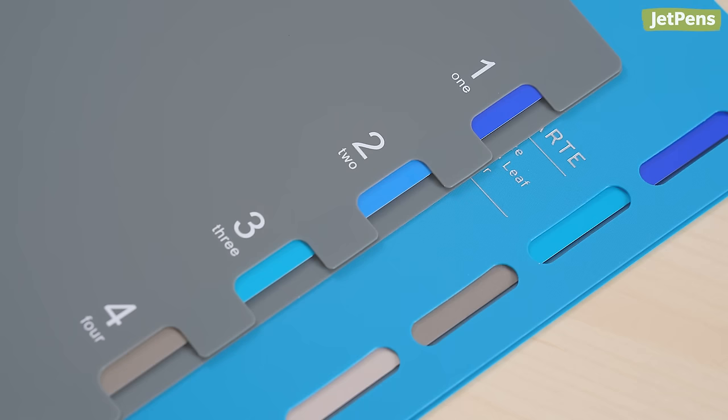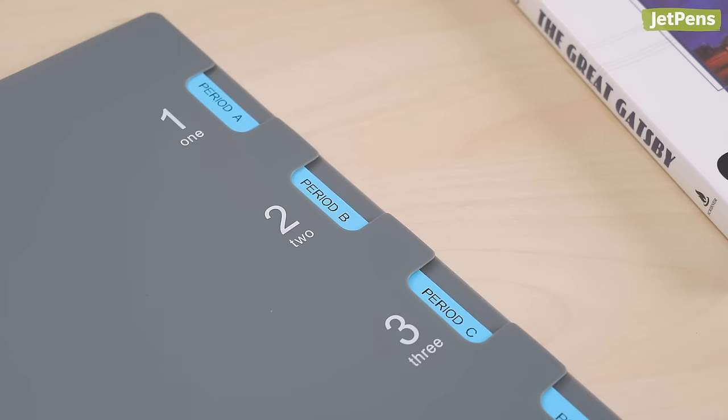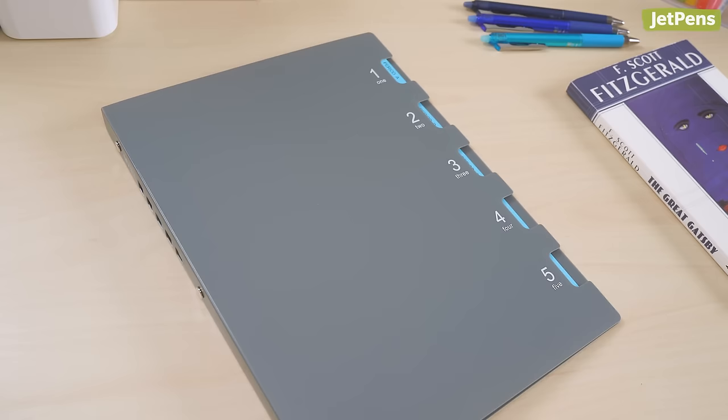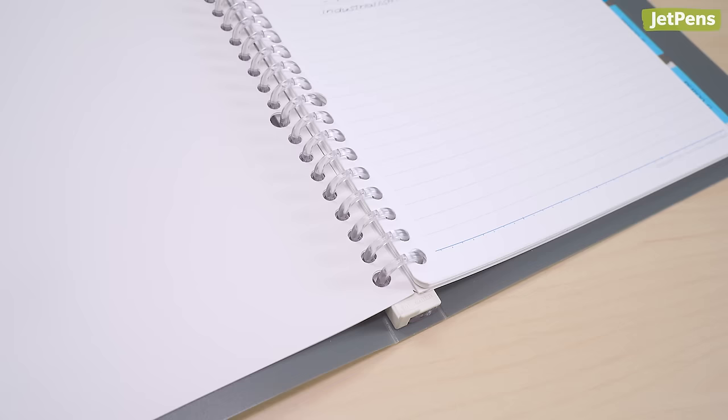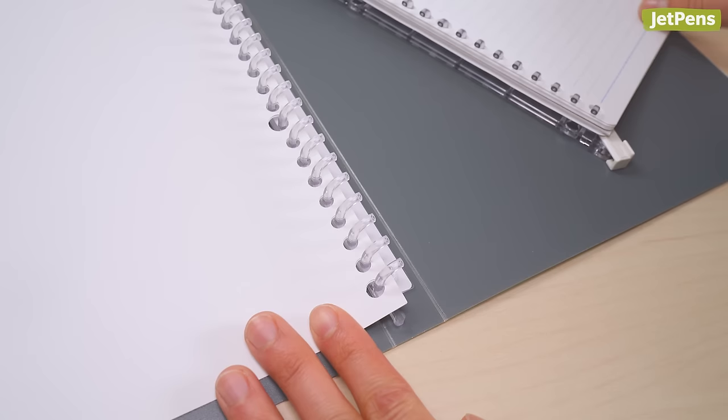Both the FiveChart and Clarte have cutouts in the cover that let you see the included index tabs at a glance. And in the FiveChart, you can flip directly to a divider without needing to open the cover. Like the KuruFit, these binders use hinged ring mechanisms that open easily.